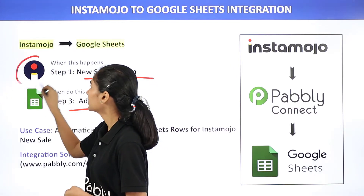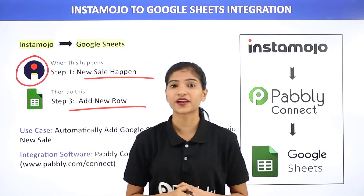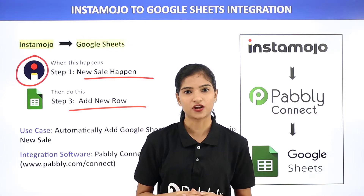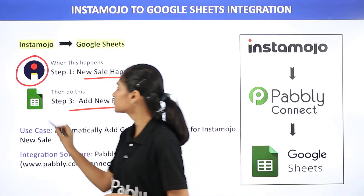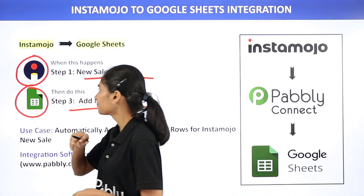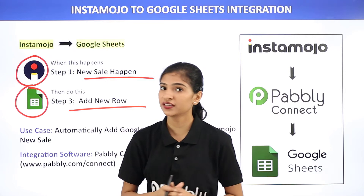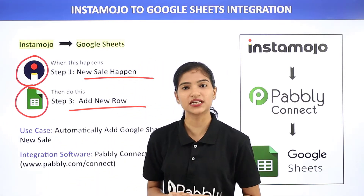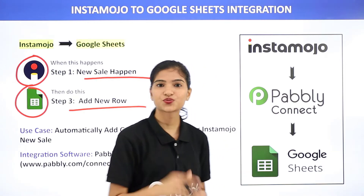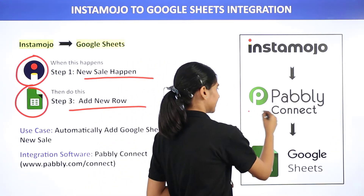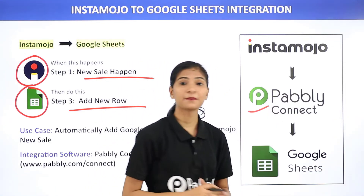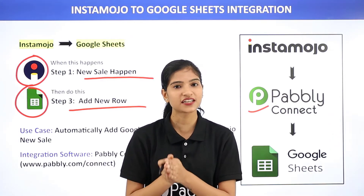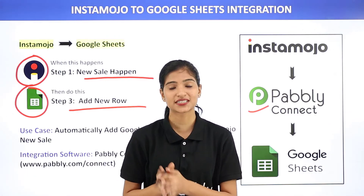Instamojo is a payment gateway and also a software application where you can set up your online store and sell your products. Whereas Google Sheets is an online spreadsheet program. The issue here is that Instamojo and Google Sheets don't have any integration between them, and that is why we are going to use Pabbly Connect, which is an integration software that will help you transfer data from Instamojo to Google Sheets.